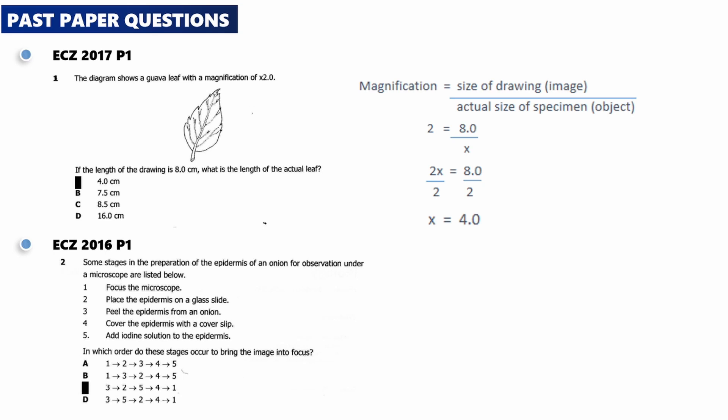The correct answer is C. The first one is peel the epidermis from an onion. Then number 2, place the epidermis on the glass slide. Then number 5, add iodine solution to the epidermis. Then number 4, cover the epidermis with a cover slip. And then finally, number 1, focus the microscope.